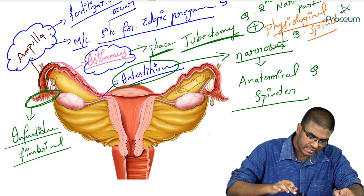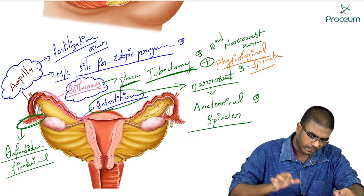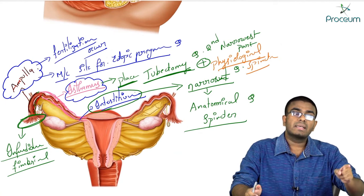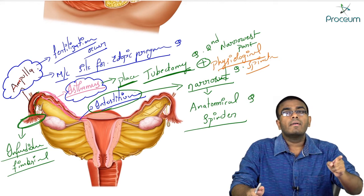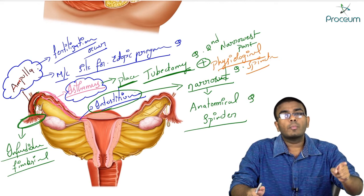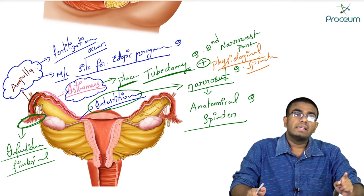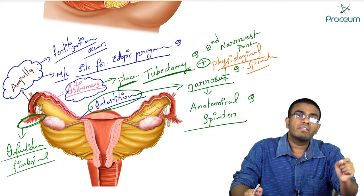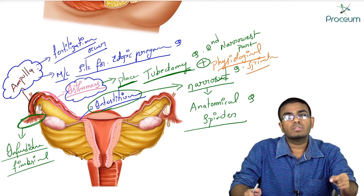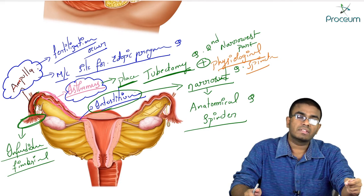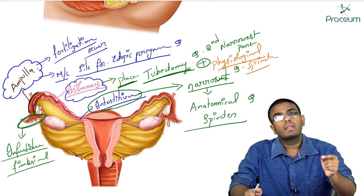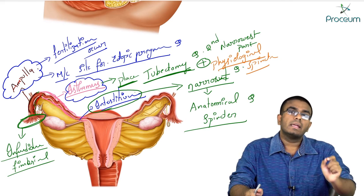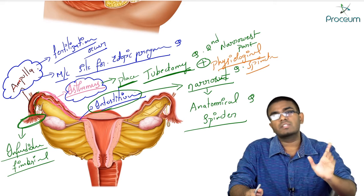Never forget these important MCQs: the ampulla is the place where fertilization occurs, and the ampulla is the most common site of ectopic pregnancy. If you want to perform tubectomy, the isthmus is the most favored site because it has the highest chances of success. The interstitium is the narrowest part and acts as an anatomical sphincter.